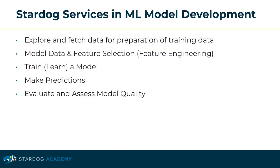Stardog provides services and capabilities that support you in all these steps of the machine learning model development lifecycle. It enables you to easily explore and fetch data in preparation for your training process — what we call training data. It also enables you to better structure and model your data, helps you select features in the feature selection and feature engineering processes, and then we can use Stardog machine learning services to train a learned model, make predictions, perform predictive analytics, evaluate prediction results, and assess the quality of our model.